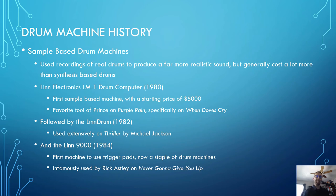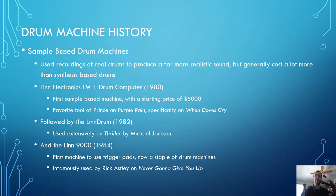The major sample-based machines to know are Linn Electronics' LM-1 Drum Computer from 1980, created by Roger Linn. It was the first sample-based machine, though it had a starting price of $5,000 in 1980 — adjusted for inflation, still completely out of reach for most musicians. But it was very popular in studios and a favorite tool of Prince, who used it extensively throughout Purple Rain, specifically on When Doves Cry. Linn followed this up in 1982 with the Linn Drum, which expanded capabilities and added better samples — a favorite of Michael Jackson, who used it all over Thriller, including the title track.